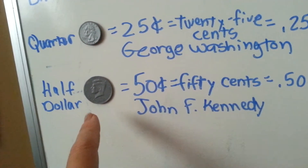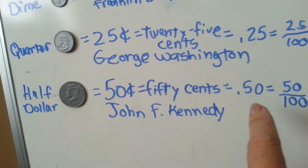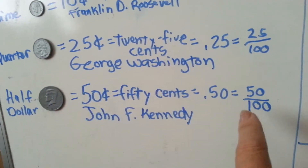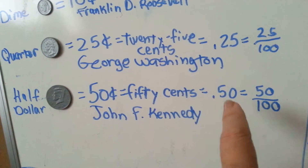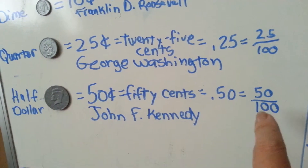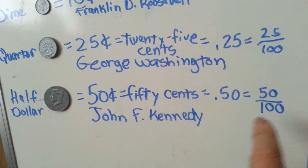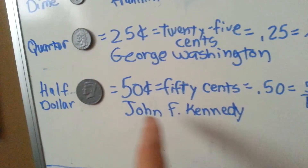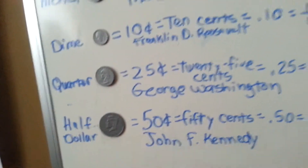The half dollar is fifty cents. It is fifty cents of a dollar, half of a dollar, and has John F. Kennedy on the front of it.